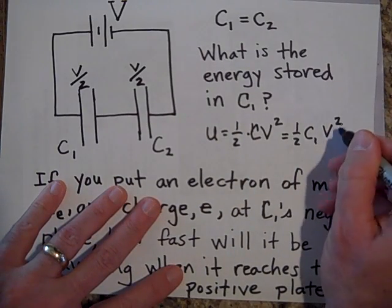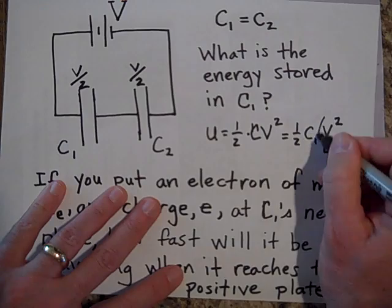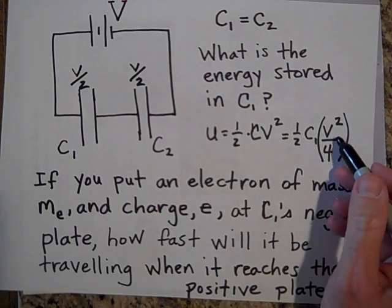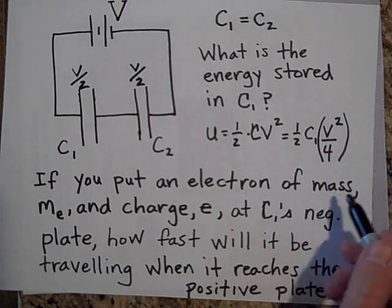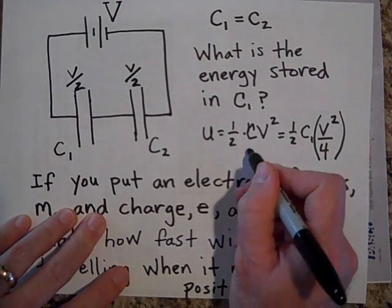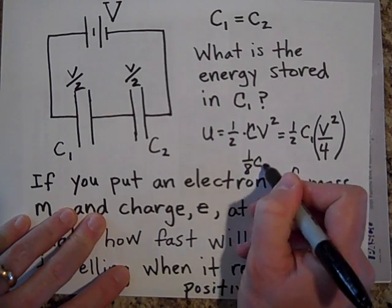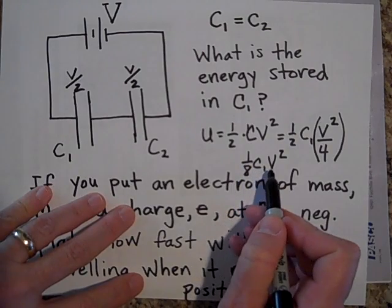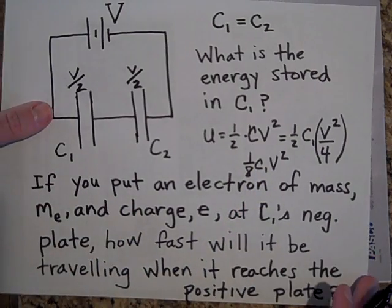I squared V over 2. I squared that and I get V squared over 4. So that's going to be, it's hard to fit this in, but it's going to be one eighth C1 times V squared. That's what it's going to be. One eighth C1 times V squared.